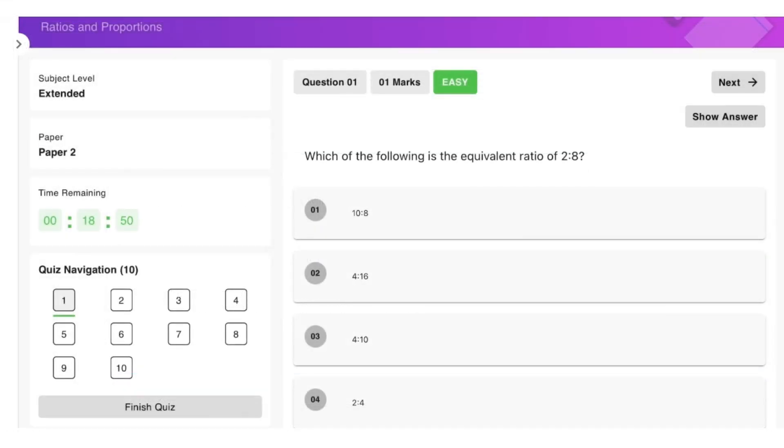All right, so we're going to finish off with a few questions. Which of the following is the equivalent ratio of 2:8? If we multiply 2:8 by 2, we can see that this is going to be 4:16, which is one of our options here. So therefore, 4:16 is the answer for this one.